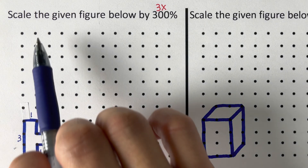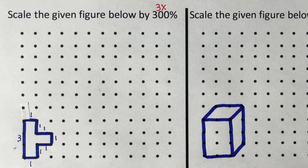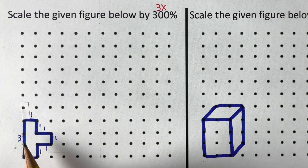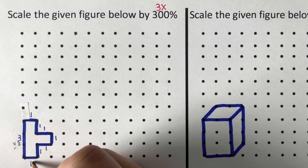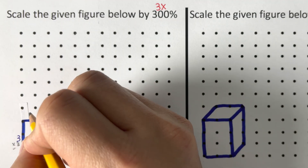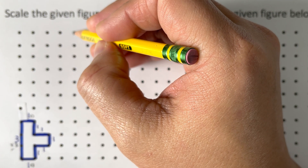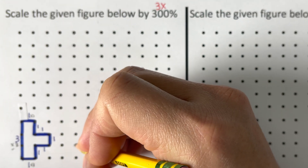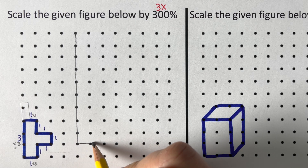We are supposed to draw a picture that is three times bigger because that is 300%. So we multiply all sides by three. Three times three would be nine, so from here I go down nine — one, two, three, four, five, six, seven, eight, nine — all the way down here. Then one times three is three, so I count one, two, three and draw that part.